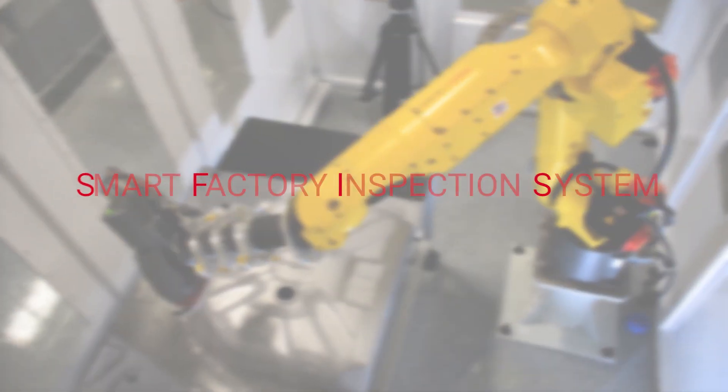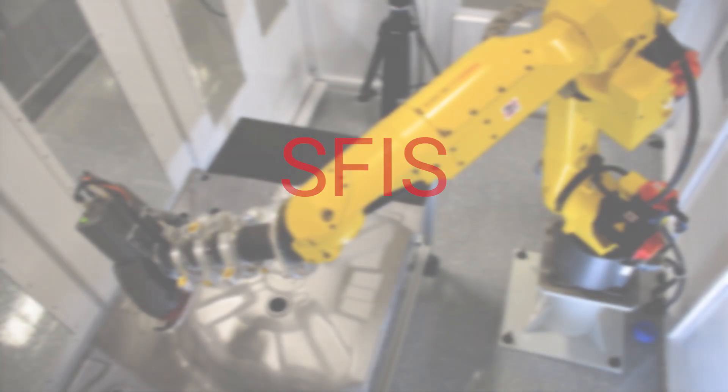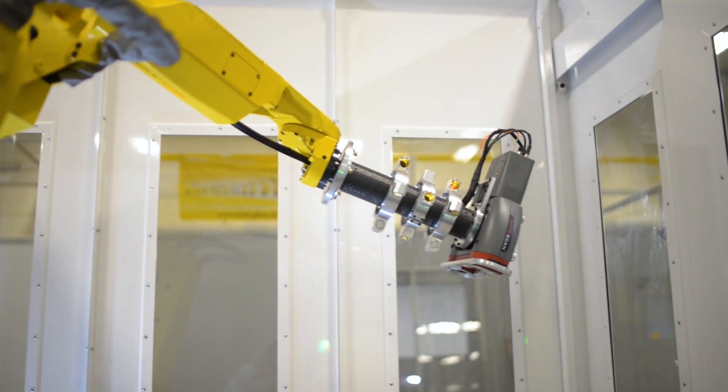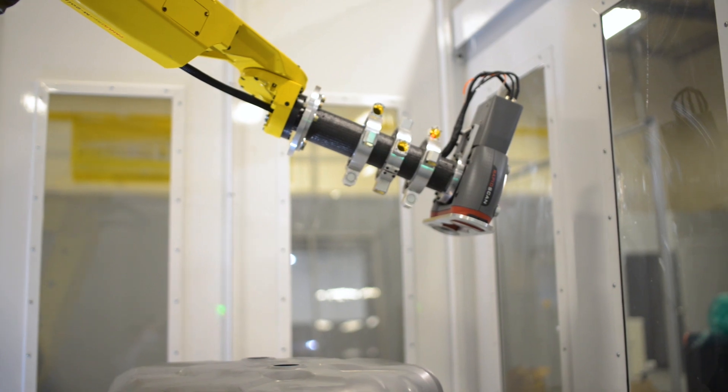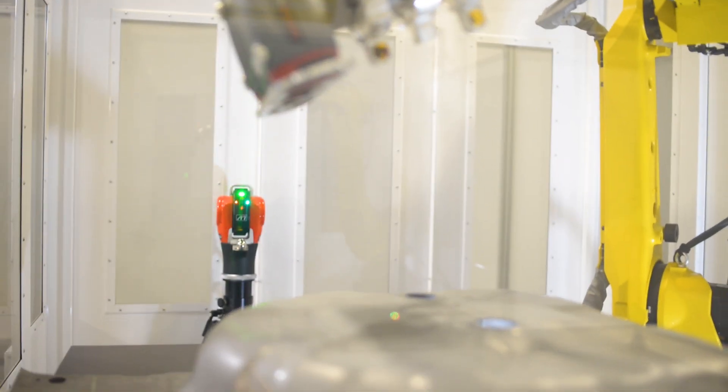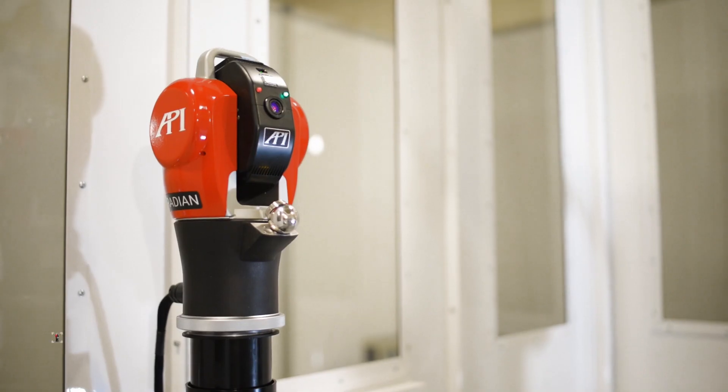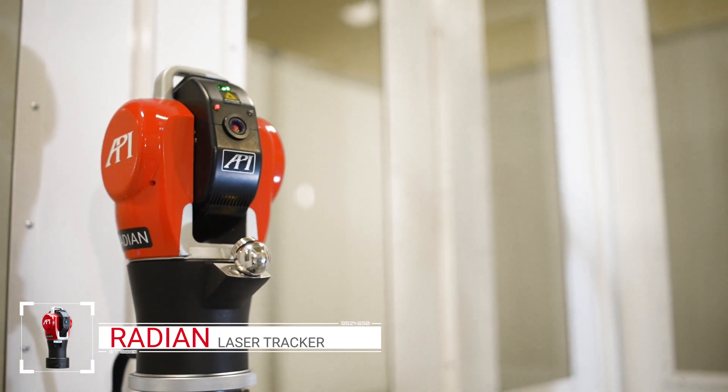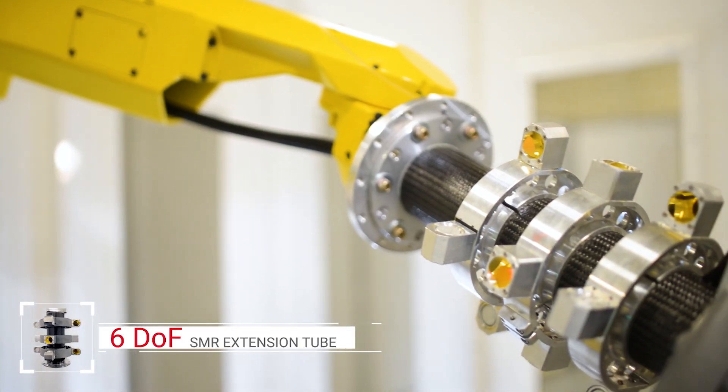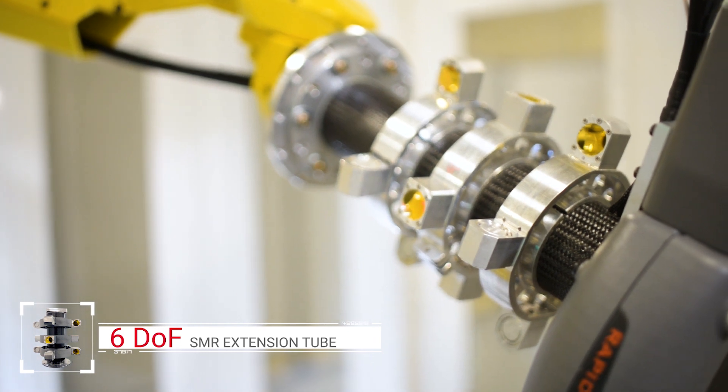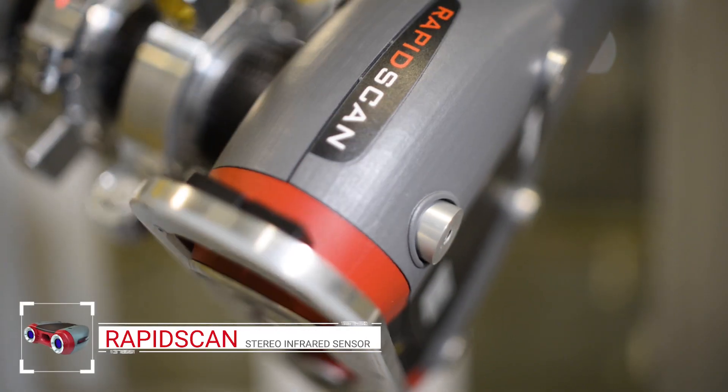API's Smart Factory Inspection System is a robot-integrated 3D scanning solution for dimensional metrology that provides automated production inspection. SFIS combines API's Radian 6 Degrees of Freedom laser tracker technology together with a breakthrough stereo infrared imaging rapid scan sensor.